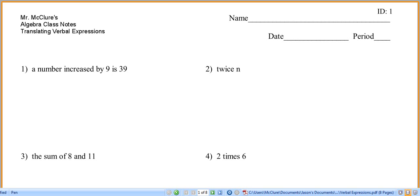A number increased by 9 is 39. So you know, increase, that's an add word. So we don't know what the number is, so we're going to write a variable. X increased by 9 is 39. So that's all we're doing with these problems.